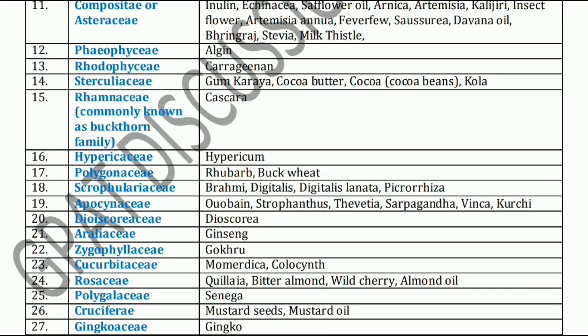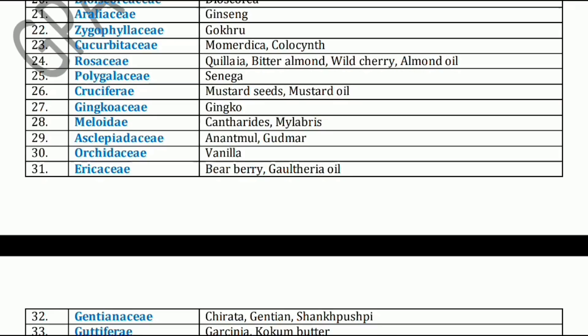Next family is Cruciferae family. Cruciferae family has Mustard seeds and Mustard oil. Next, Ginkgoaceae family. Ginkgoaceae family includes Ginkgo — Ginkgo biloba.